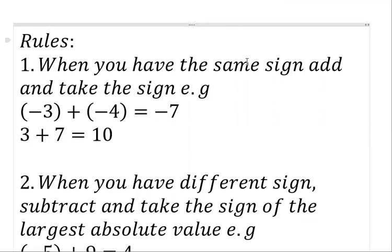Rule number one: when you have the same sign, all you need to do is add and take the sign. Since you're having the same sign, just add and take the sign. For example, we have minus three plus minus four. They're having the same sign — minus and minus — so just add: three plus four gives us seven, then take the sign. Both are having minus, so the answer is minus seven.